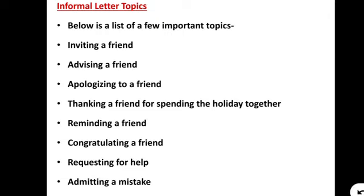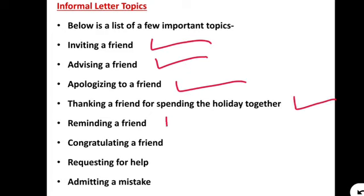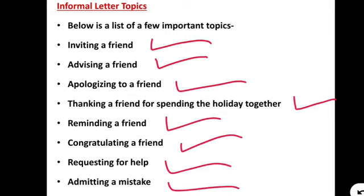Here are some topics on which we write informal letters: inviting a friend to a party, advising a friend about choosing their career or leaving bad habits, apologizing to a friend for something wrong you did, thanking a friend for spending the holidays together, reminding a friend, congratulating a friend, requesting for help, and admitting a mistake. These are the common topics for informal letters.